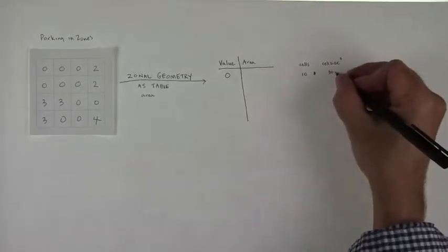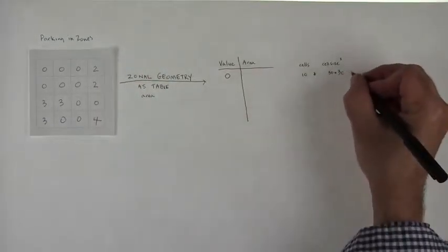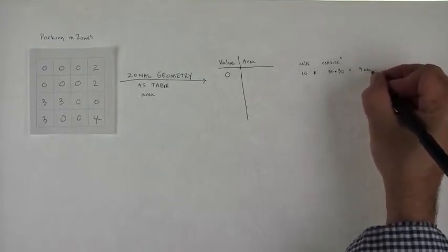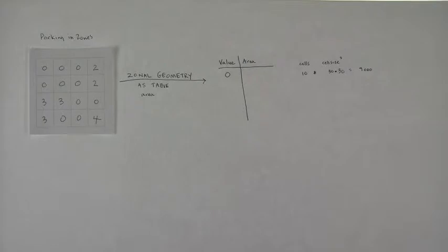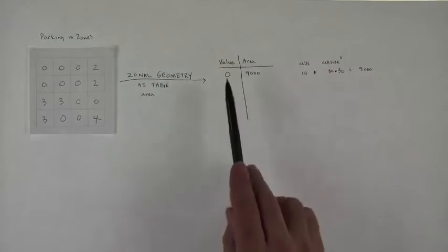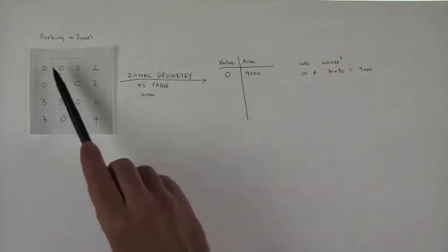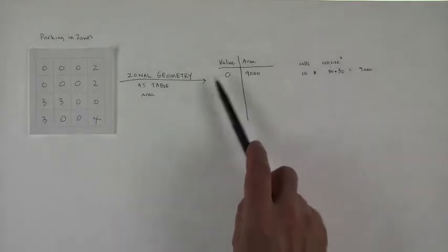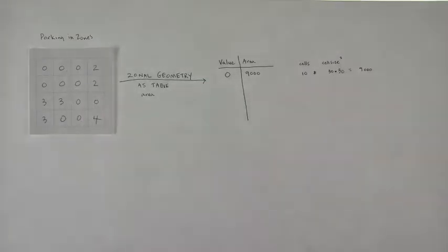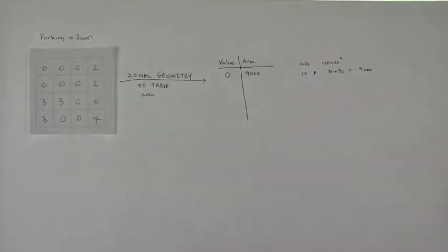Times the cell size, which in our case was 30, and then squared. So times 30 times 30 because it's both dimensions. I think that's going to give us 9,000 as our area. So the zone defined by zero, in this case the zones are all contiguous, doesn't need to be, but the zone is basically all of the cells in the raster that have the value zero. That zone has an area of 9,000 square meters in this case.